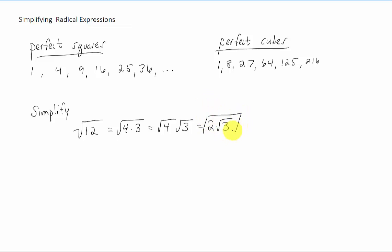So this is considered the simplified version of the square root of 12. And the only reason I chose to split 12 up into four and three is because four is a perfect square and it's simplified.